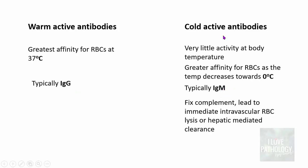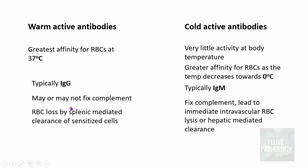The mechanism of RBC destruction is by complement fixation. IgM antibodies fix complement, leading to immediate intravascular RBC lysis or hepatic-mediated clearance. Warm active antibodies may or may not fix complement, but RBC loss is primarily by splenic-mediated clearance of sensitized red cells.